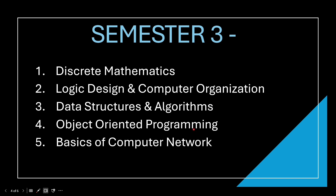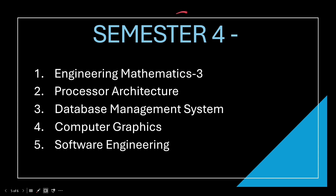Then you have to take Object-Oriented Programming and Basics of Computer Networks. The recommended order is: first start Discrete Mathematics, then Data Structures and Algorithms, then Logic Design and Computer Organization, and then those two. Now for Semester 4: again you have Engineering Mathematics 3, which is common, then Processor Architecture — a new subject — then Database Management, then Computer Graphics, and Software Engineering.